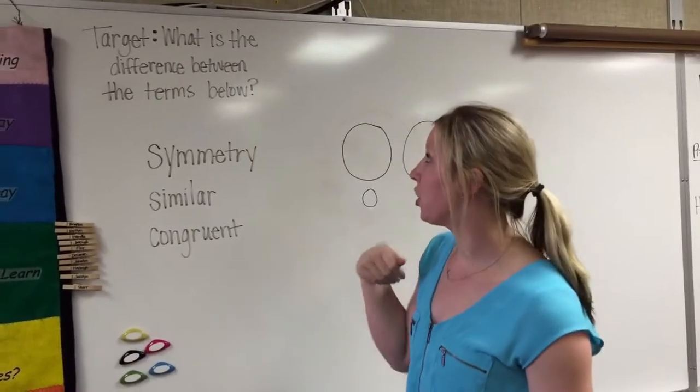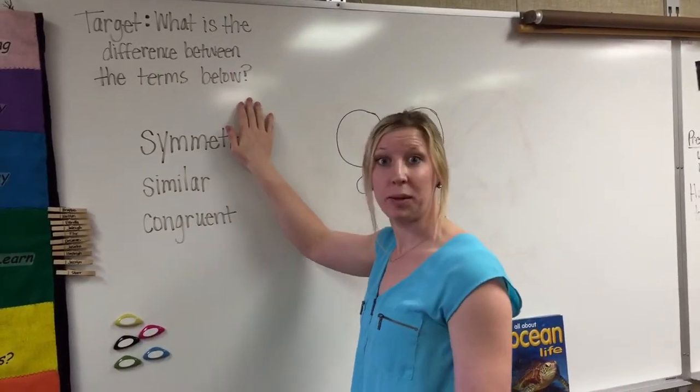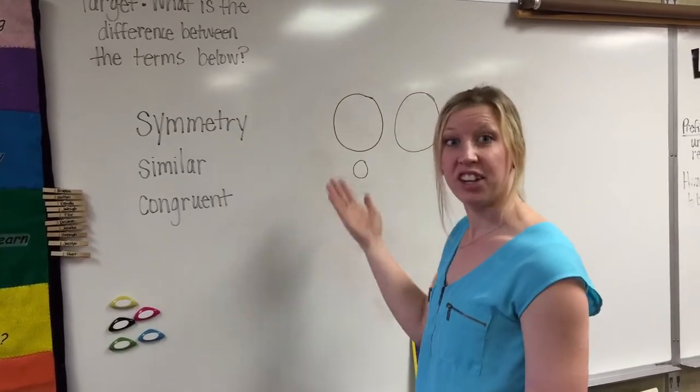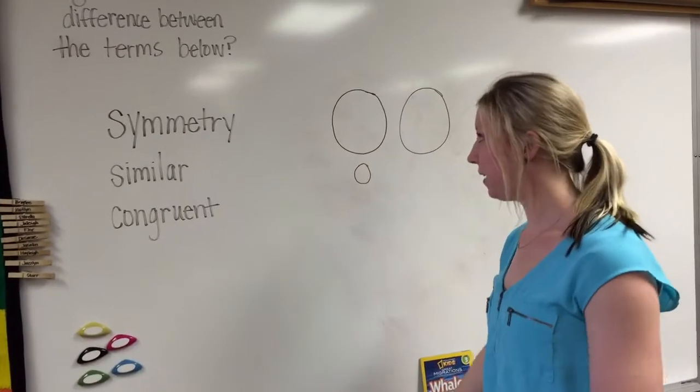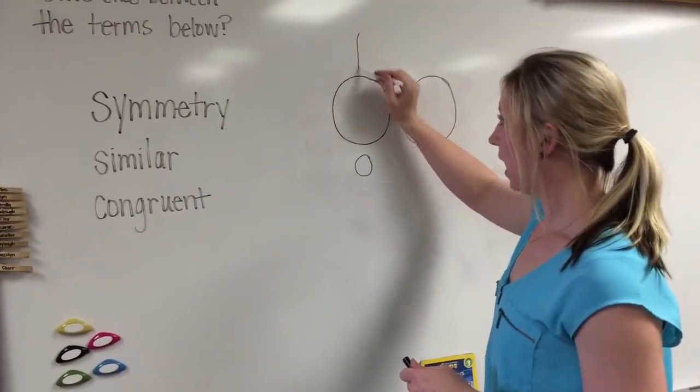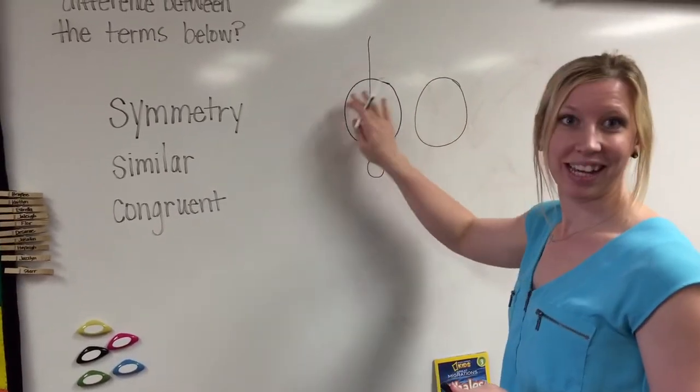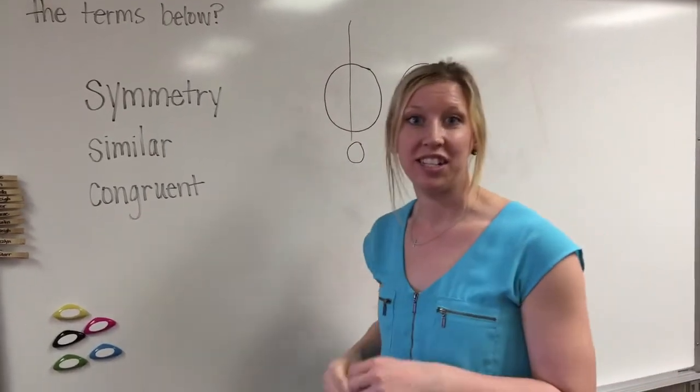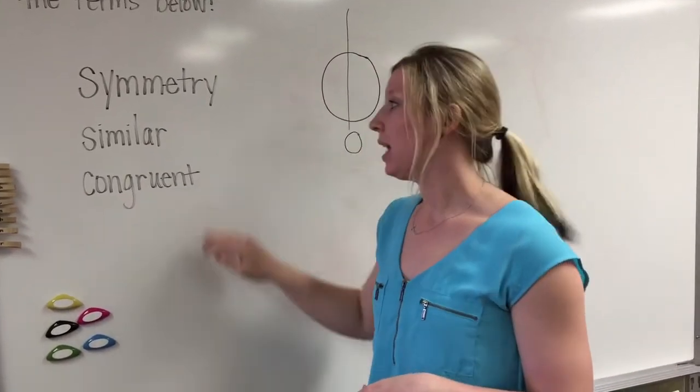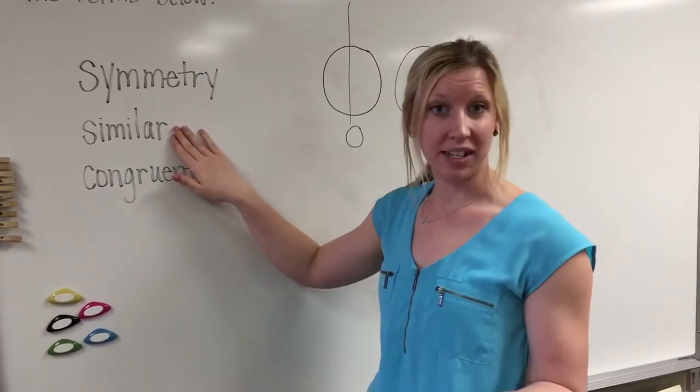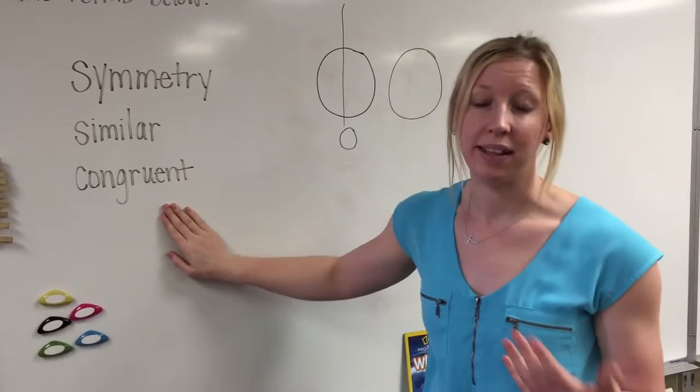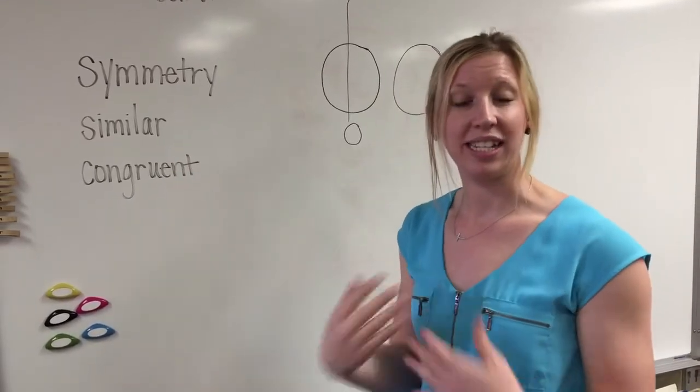So now you guys should know the difference between all of these. Symmetry is where you can cut a shape in half. Remember that line of symmetry? And both sides are the exact same size. Similar and congruent are just talking about those two different shapes. If they're similar, that means they're the same shape, but they might be different sizes. And congruent means they're the same shape, same size, they look exactly the same.